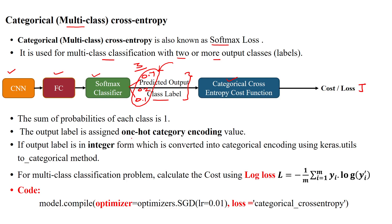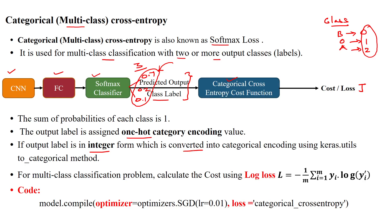The output label is assigned using one-hot encoding. For example, if our class labels are fruit names like banana, orange, and apple, they are encoded as: banana → 0, orange → 1, apple → 2. If the output label is in integer form, it is converted into categorical encoding using the Keras `keras.utils.to_categorical` method.